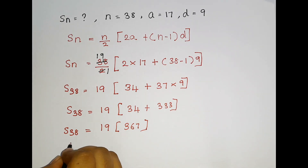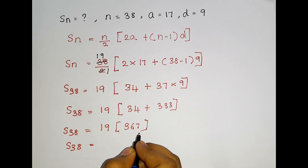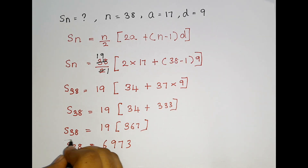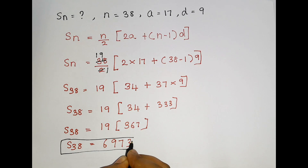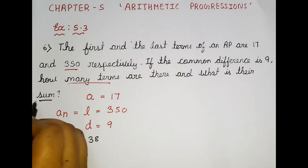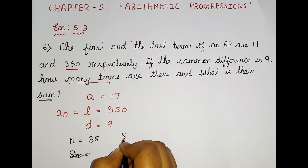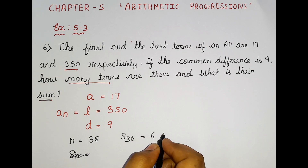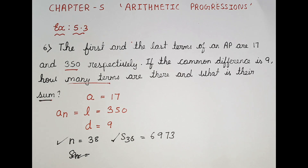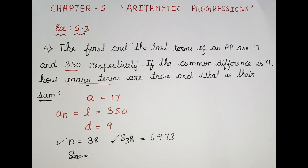So S38 = 19 × 367 = 6973. This is our sum. So finally we found the SN value: S38 = 6973, and N = 38. Thank you guys for watching this video — please like this video, share it with your friends, and subscribe to our YouTube channel. If you have any doubt, comment in the comment section. Catch you in the next video, bye!